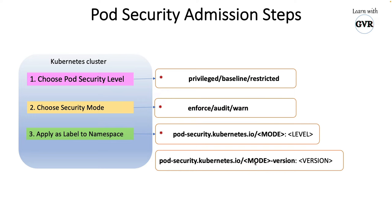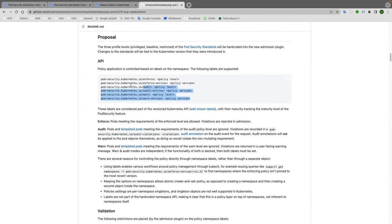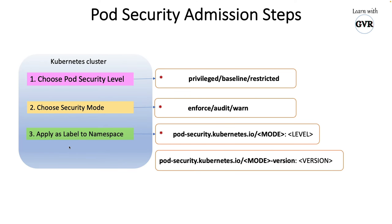The version label is optional — it lets you specify which Kubernetes version the enforcement applies to, like enforcing audit only on 1.22. All label definitions are available on the GitHub page, including `enforce`, `enforce-version`, `audit`, `audit-version`, `warn`, and `warn-version`. Note that since this is a beta feature, these details may change once it becomes generally available.